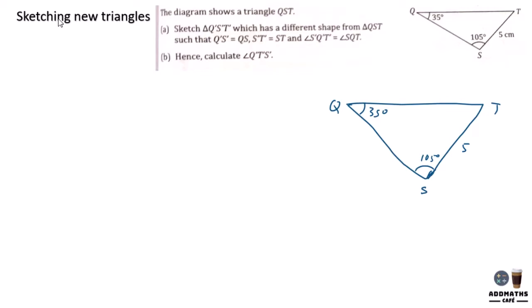Sketch another triangle QST which has a different shape such that QS is QS, ST is ST, and angle SQT is the same. So this part, this part, this part is the same.